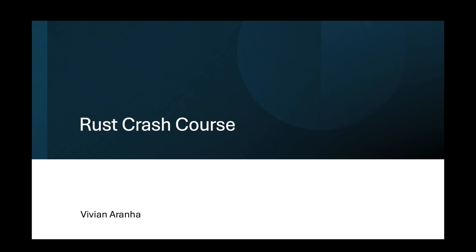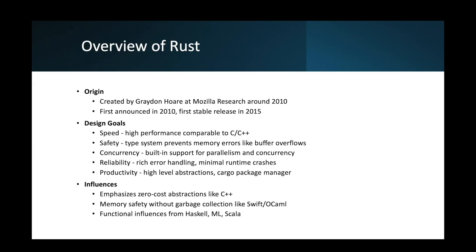Let's go with an overview of Rust. For its origin, it was created by Graydon Hoare at Mozilla Research around 2010. Graydon Hoare was a developer at Mozilla who needed a safer systems language. He began working on Rust as a personal project around 2006. First prototypes were implemented around 2008 to 2010, and he officially announced the Rust project in 2010.